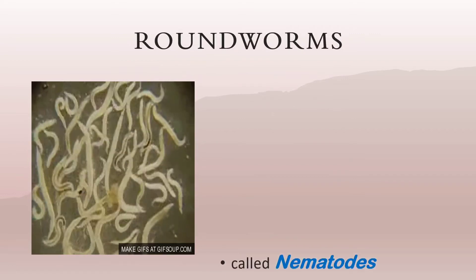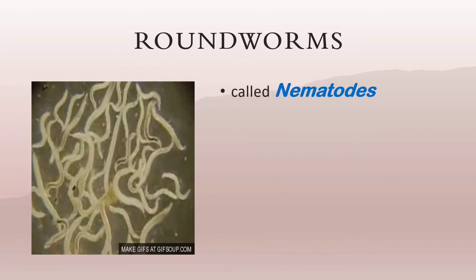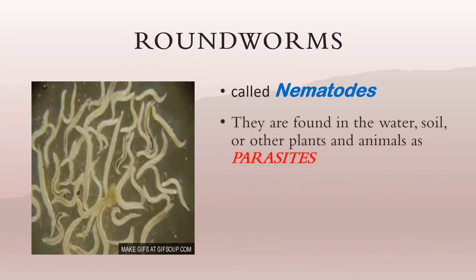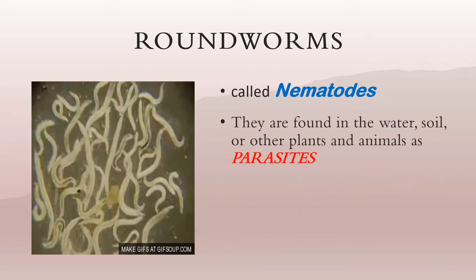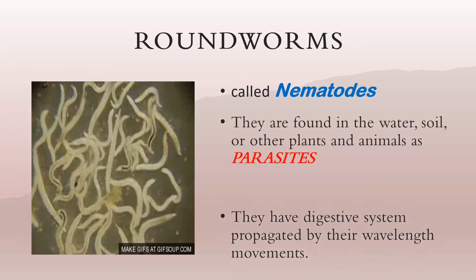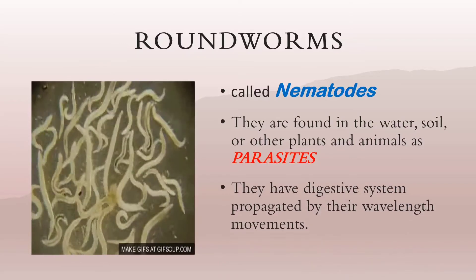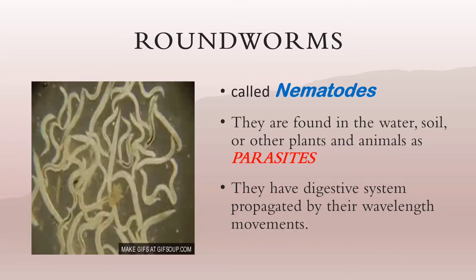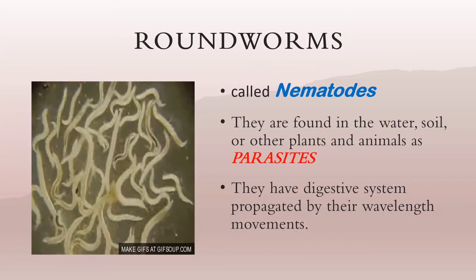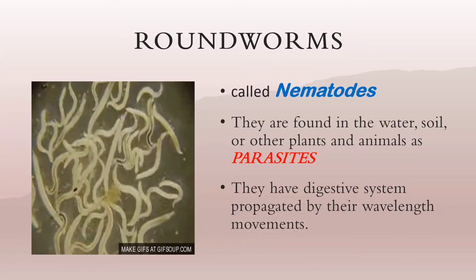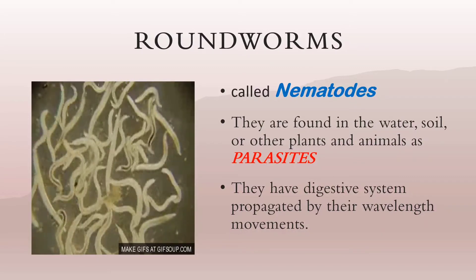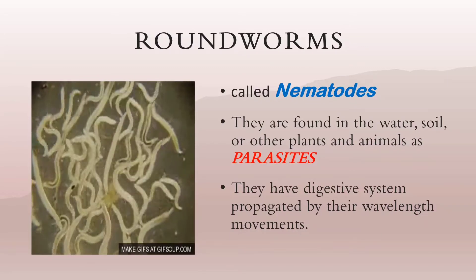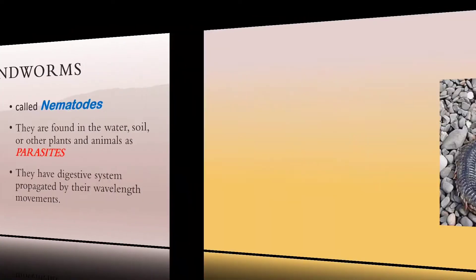Roundworms are also called nematodes. Roundworms are found in the water, in the soil, or in other plants and animals as parasites. Roundworms take in food through the mouth and excrete waste materials through the anus. The passage of food through the digestive system is propelled by the worm's wave-like movement.